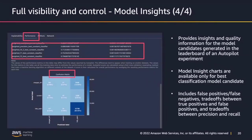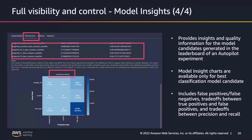The model insights report is essentially the performance tab for your best model, providing details and insights about the quality of the model candidates generated. It provides all your false positives and false negatives, trade-offs between true positives and false positives, trade-offs between precision and recall, confusion matrices, precision and recall curves, and ROC curves.